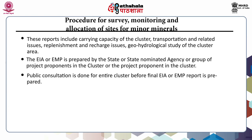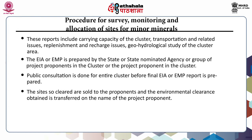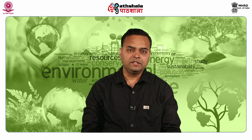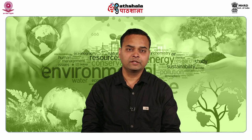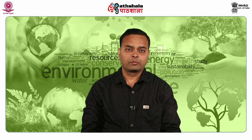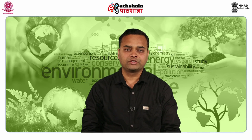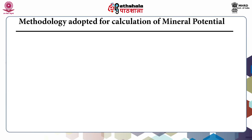Public consultation is done for the entire cluster before the final EIA or EMP report is prepared. The sites so cleared are sold to the proponents, and the environmental clearance obtained is transferred in the name of the project proponent. EIA and EMP are required only in cases where the project falls under Category A, Category B1, or Category B2 at state level — not for Category B2 at district level projects.